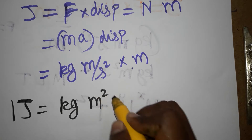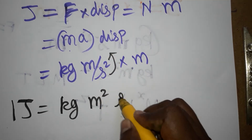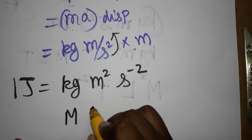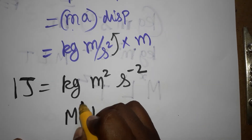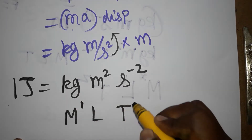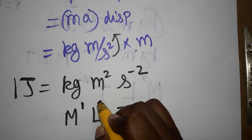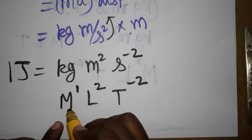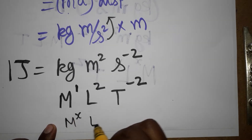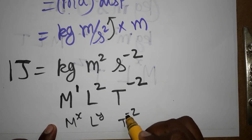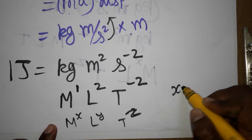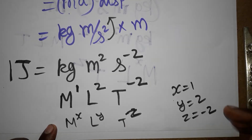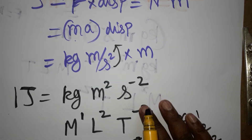The final unit: one Joule is equal to kg·m²·s⁻². The dimensional formula is M¹L²T⁻², where mass is M, length is L, and time is T. So we write this as M^x · L^y · T^z, giving us x = 1, y = 2, z = −2.